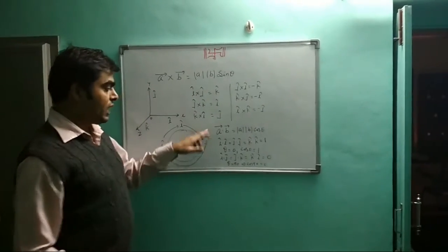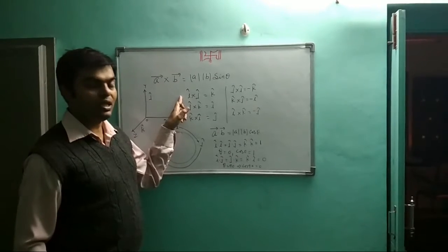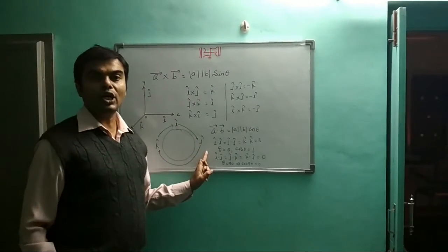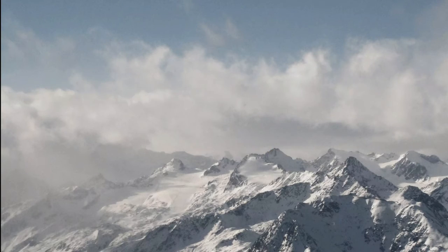This covers scalar and vector quantities. The unit vectors are complete. First was the cross product, second is the dot product. Thank you.